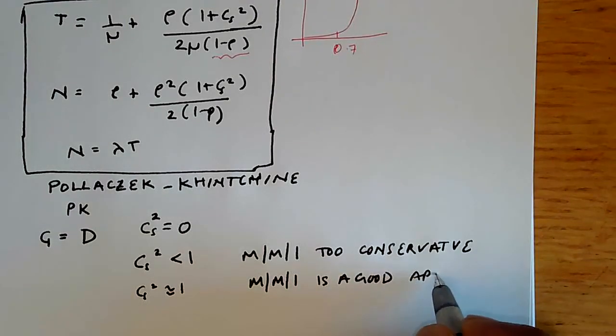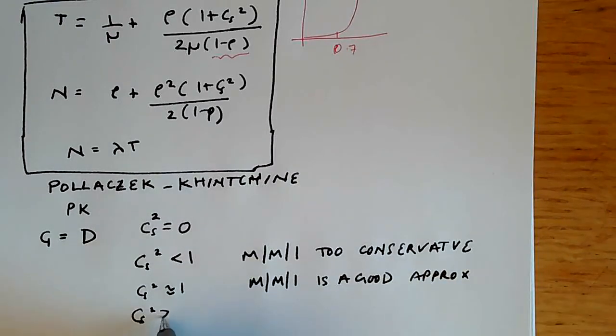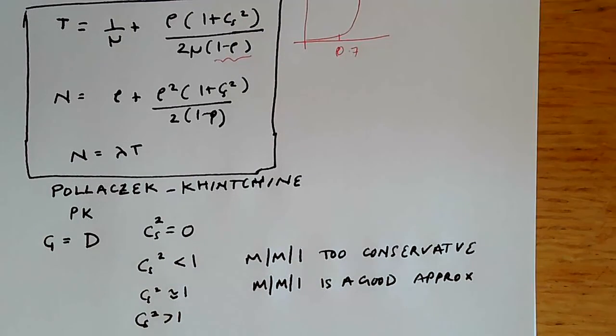When C_S squared is greater than one, we need to explicitly model C_S squared very well, and so we have to use the PK formula for that reason.